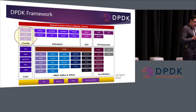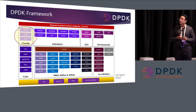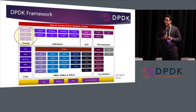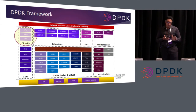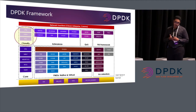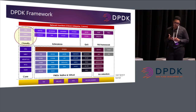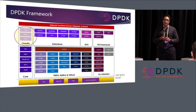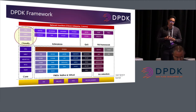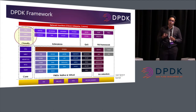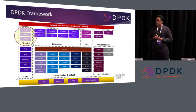With DPDK, there are multiple libraries doing flow classification. The first part of my talk will talk about the exact match library, which is the RTE hash library. We also have the ACL and LPM library to support variable key size. Towards the end of my presentation, I will talk about some ideas on improving the performance.